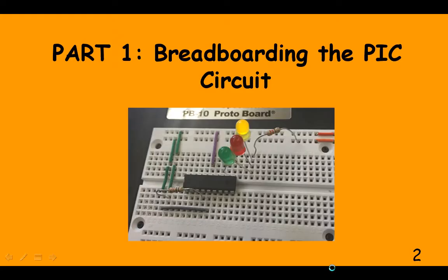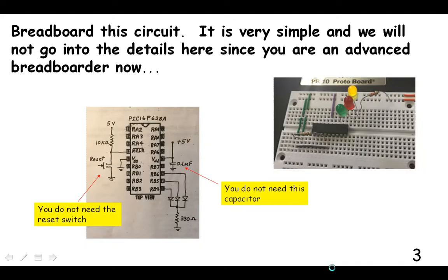How do we breadboard the PIC circuit? We're not going to really go into that much. It's a very simple circuit. All you have is just a few components here. I will mention that you don't need this reset switch. We could throw the reset switch in there and that would perform the same function as just removing the power from the chip. So we don't really need that. And we don't need this smoothing capacitor right here.